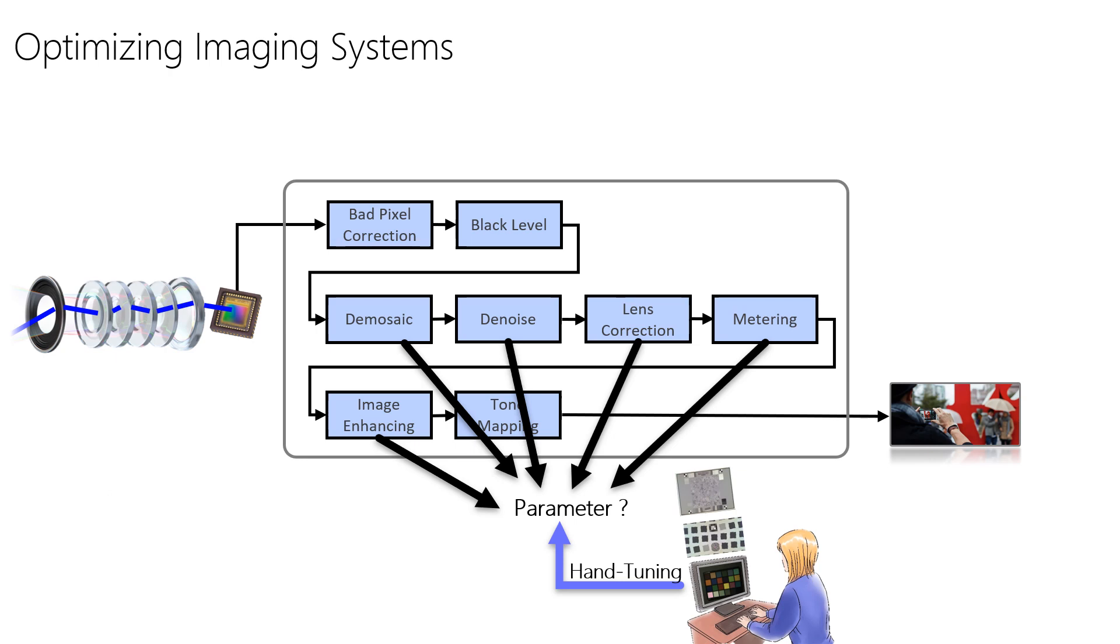Furthermore, there is no guarantee that the parameters found are optimal in any local or global measure. In addition, this process is only feasible for white box systems. For black box implementations, experts cannot rely on domain knowledge.